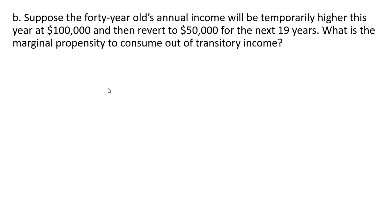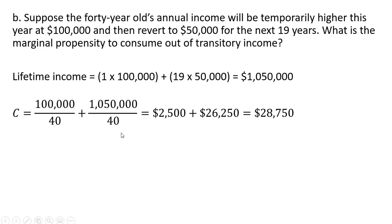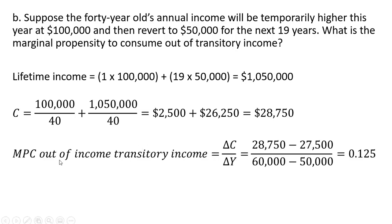Now let's look at a change in temporary income. Suppose a 40-year-old's annual income will be temporarily higher this year at $100,000 and then revert to $50,000 for the next 19 years. What is the marginal propensity to consume out of transitory income? The person earns $100,000 this year and $50,000 each of the next 19 years. Plugging that into the consumption function, annual consumption is $28,750. The marginal propensity to consume out of transitory income — the change in consumption over the change in income — gives a very small value of 0.125.